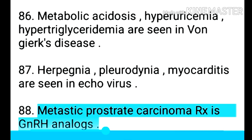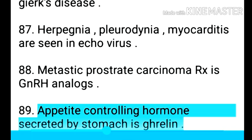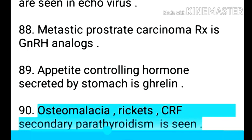Point 89: Metastatic prostate carcinoma treatment is GnRH analogues. Point 90: Appetite-controlling hormone secreted by the stomach is ghrelin. Point 91: Osteomalacia, rickets, and CRF secondary hyperparathyroidism are seen.